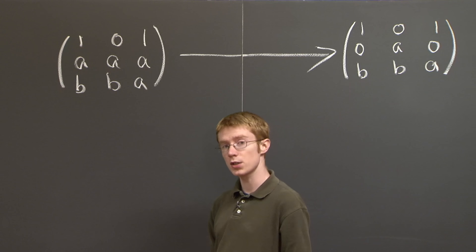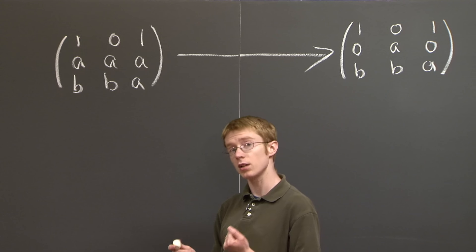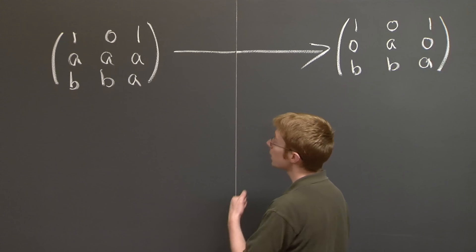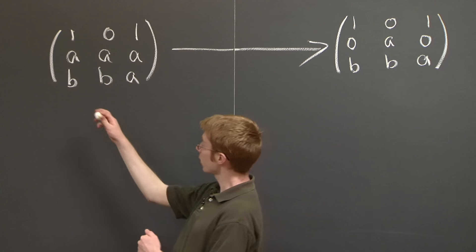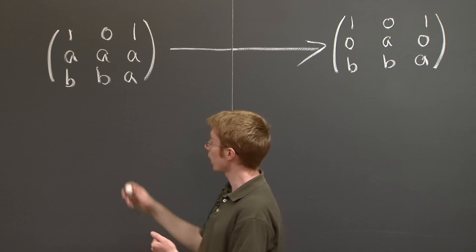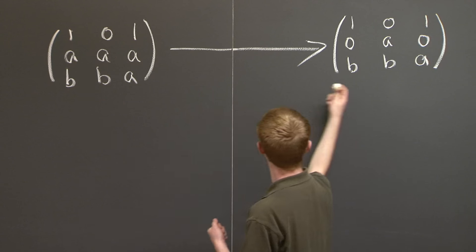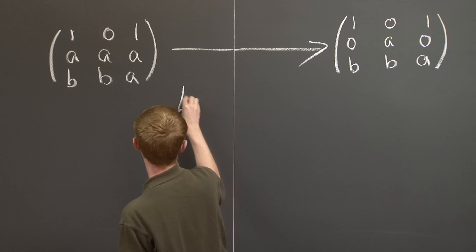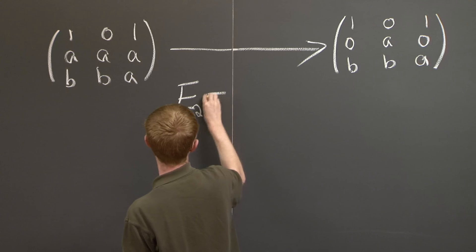OK. But we're not just doing elimination. We're finding an LU decomposition. So we need to keep track of the elimination matrix that I multiplied this matrix A by on the left to get this matrix. So what is that? That's this E_{2,1}.